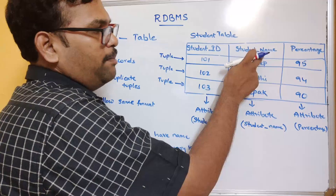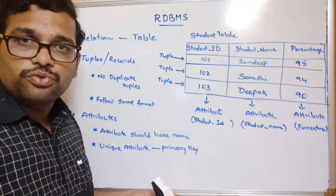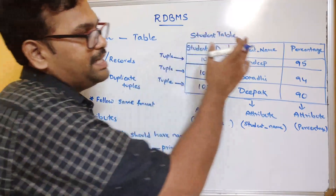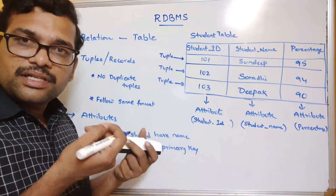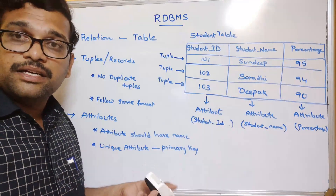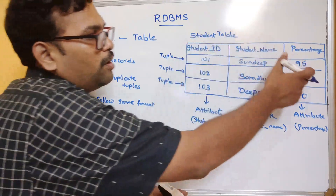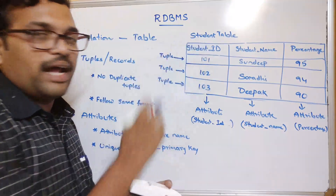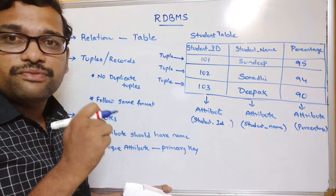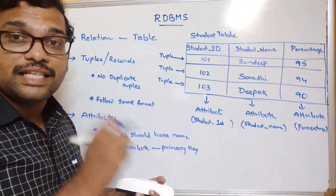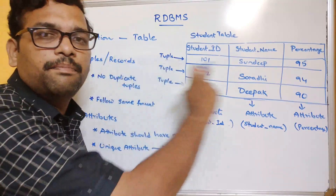For example, if you take student name, in a class there can be multiple students with the same name, so it should not be considered as a primary key. Similarly, more than one student can get the same percentage, so that should not be the primary key either. Coming to student ID — no two students will share the same student ID, so that is the unique attribute. We call it a primary key to identify the complete tuple.